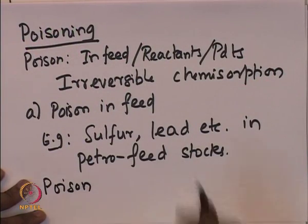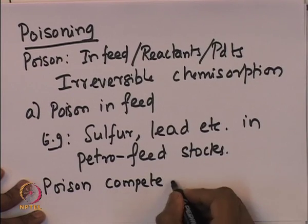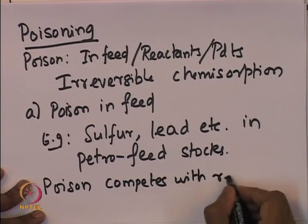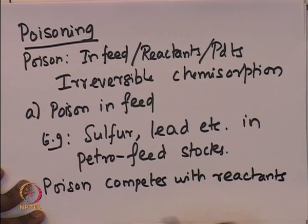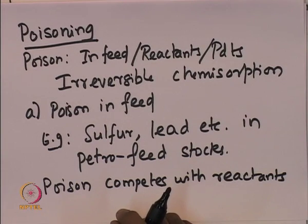The poisonous materials actually compete with the reactants. What happens is that the catalytic reaction occurs by reactants adsorbing onto the catalyst site. The poison also seeks to adsorb onto the surface of the catalyst site. Therefore, the poisonous materials are strongly competing with the reactants for the vacant sites, and thus poisoning simultaneously happens along with the chemical reaction.